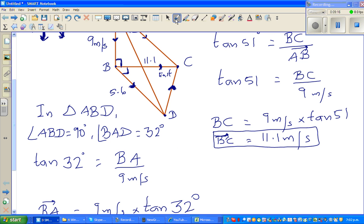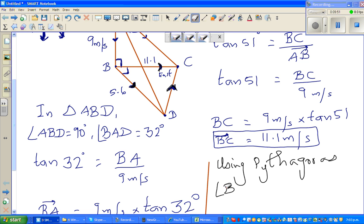I'll change color and draw a line here. This is the vertical component of the speed of the wind, and this is the horizontal component, and this is the resultant. Here you can use Pythagoras. To use Pythagoras, you can see that angle CBD is a right angle, so I can say CD squared equals 5.6 squared plus 11.1 squared.